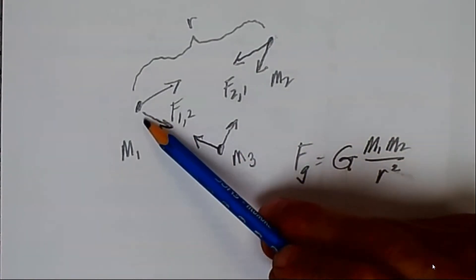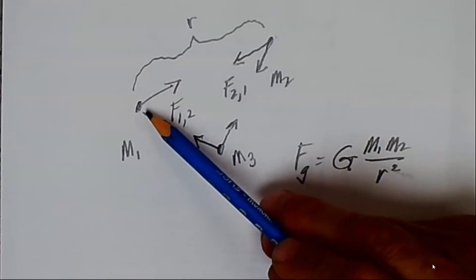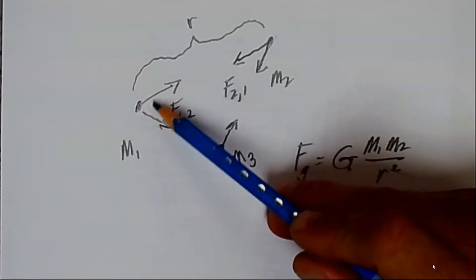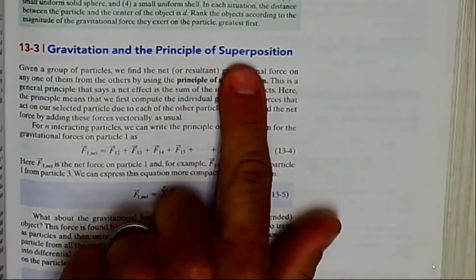So if I want to know what is the gravitational force acting on number 1 because of 2 and 3, then I have to add these vectors. And that is called the principle of superposition.